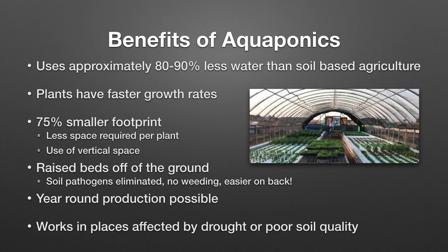What are some of the benefits we see in aquaponics? We use approximately 80 to 90 percent less water than soil-based agriculture. In intensive recirculating aquaculture, systems are characterized by 10 percent or less water exchange per day. In aquaponics, we see 1 to 3 percent water exchange per day, and even less in some cases where the water is mineralized. In addition, plants have faster growth rates than in soil-based agriculture and a 75 percent smaller footprint, meaning less space is required per plant.